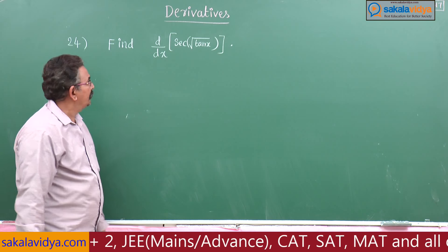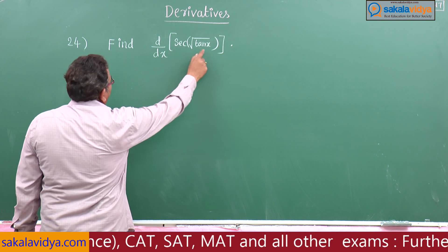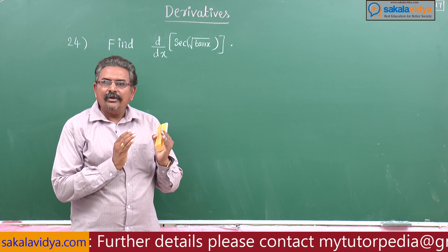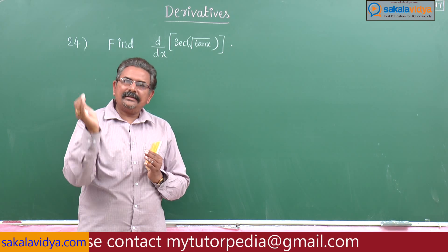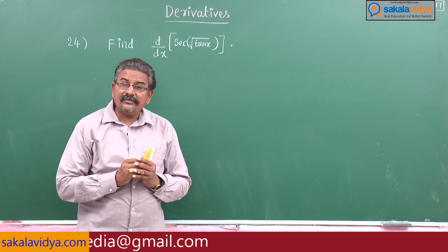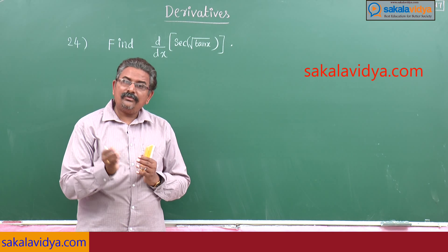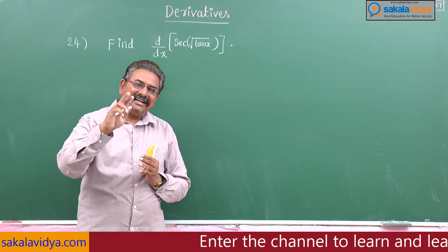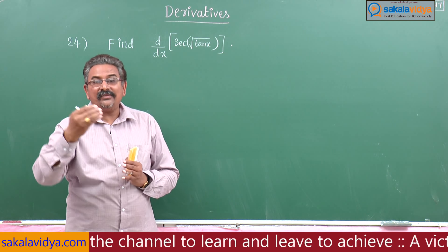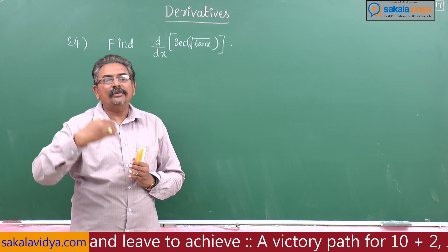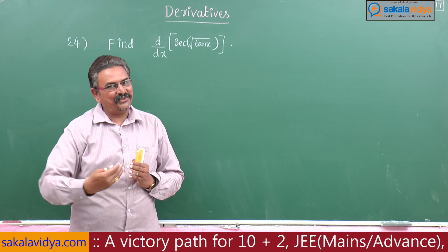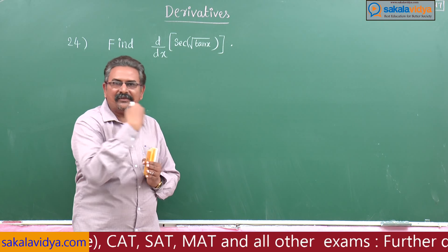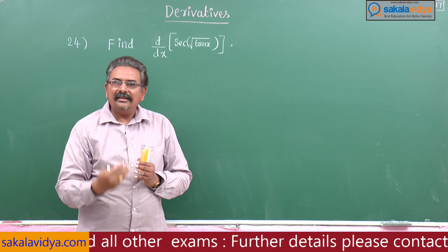Let us solve one more problem. Find d by dx of secant of root tan x. Let us assume root tan x equals u, so it is in the form of secant u. The derivative of secant u is secant u tan u into du by dx. Here again u is root tan x, which is in the form of root u. The derivative of root u is 1 by 2 root u into du by dx, so the chain process will be continued. That is why this method is called chain rule.